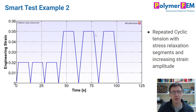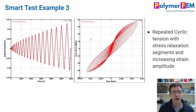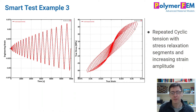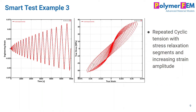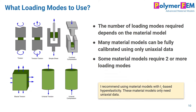Here's another example I like. If you load and unload to larger and larger strains, holding the strain constant at each peak value, you get information about the relaxation response as a function of strain, and the unloading response in both tension and compression. A lot of information from one specimen — pretty smart.